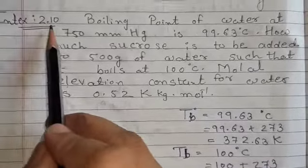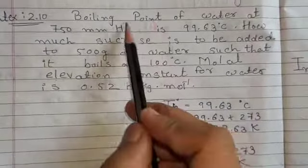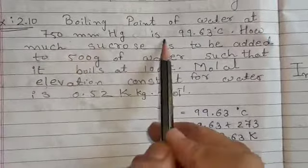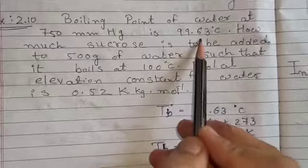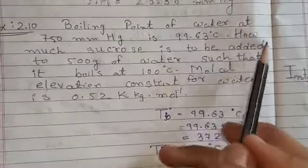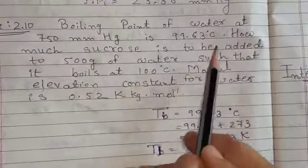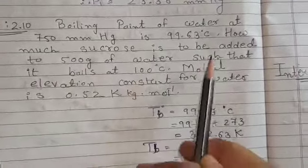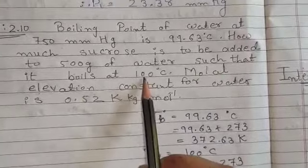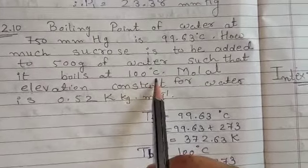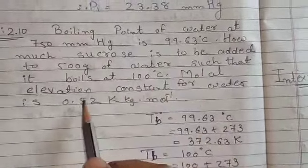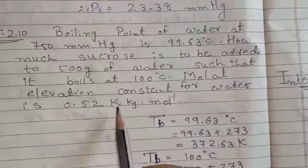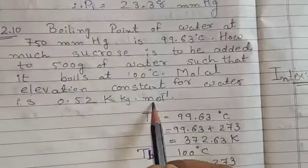Now in text question 2.10: The boiling point of water at 750 mmHg is 99.63 °C. How much sucrose is to be added to 500 grams of water such that it boils at 100 °C? The molar elevation constant for water Kb = 0.52 Kelvin·kg/mol.